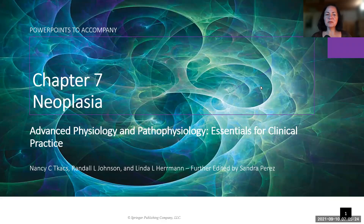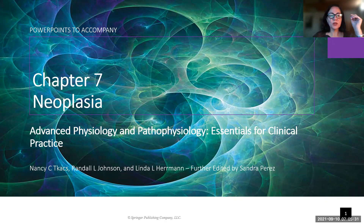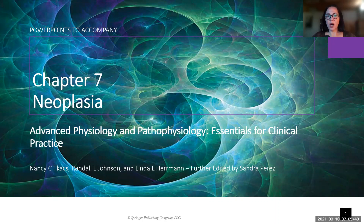Hello, and welcome to part one of the lecture on chapter seven: neoplasias. In this first part, we're going to be covering some general information about the cell cycle so that we can go into more detail about what are the specific problems that lead to neoplasias, or overgrowth of cells.